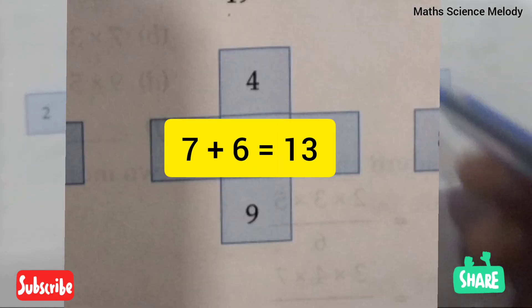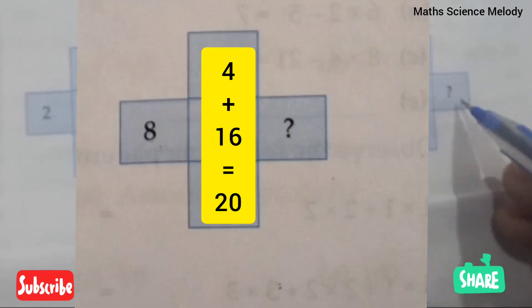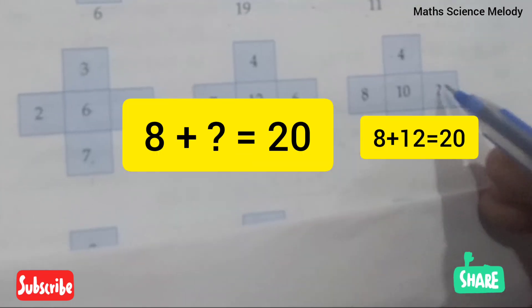Eight - which number will we add to get twenty? So the answer will be twelve here.